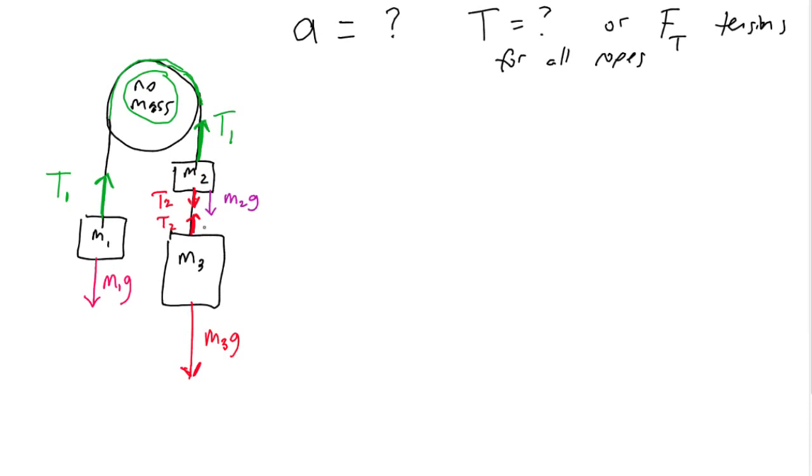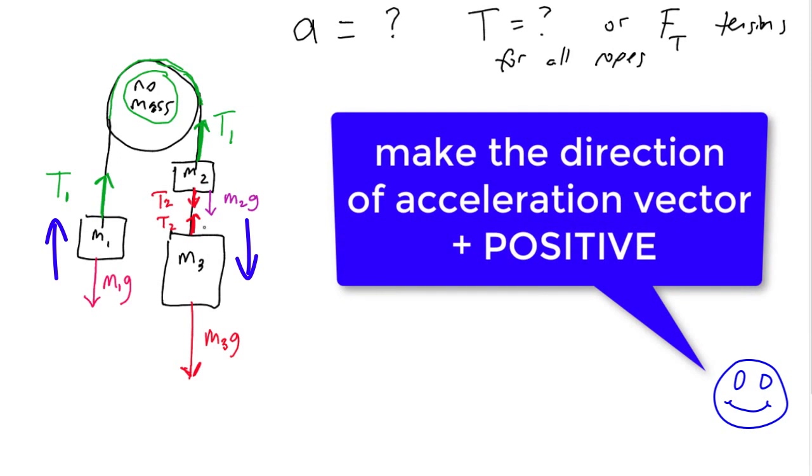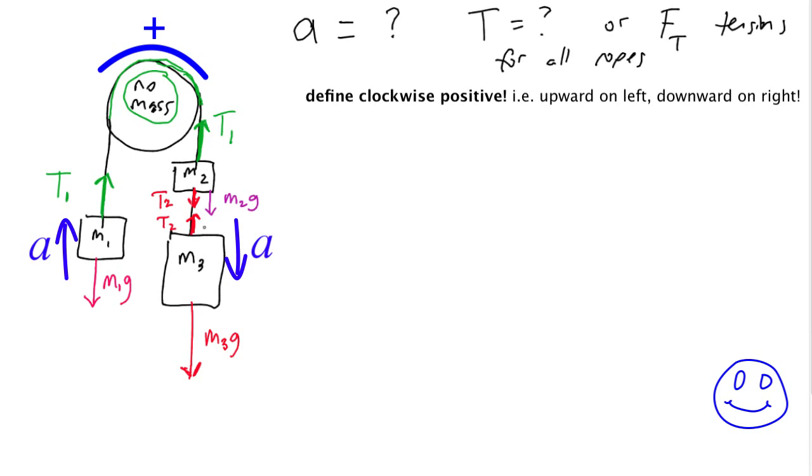What we're going to do is create one equation for each object. But before we do that, we have to determine which way are we going to call positive. And that's a little bit tricky, because when M1 is going up, or M3 and M2 are going down, which way do we call positive? In general, we always want to make the direction of acceleration positive, because then we won't have to put a negative A anywhere in our equations. But how do we do that? Because it's accelerating up on the left and down on the right. Well, there's actually an easy solution. If you just make the clockwise direction positive, that means that when the left side is going upward, the right side is going downward, and we'll just call that direction positive. Problem solved. So just around to the right clockwise is going to be positive. So then all we got to do is just create one equation for each object.